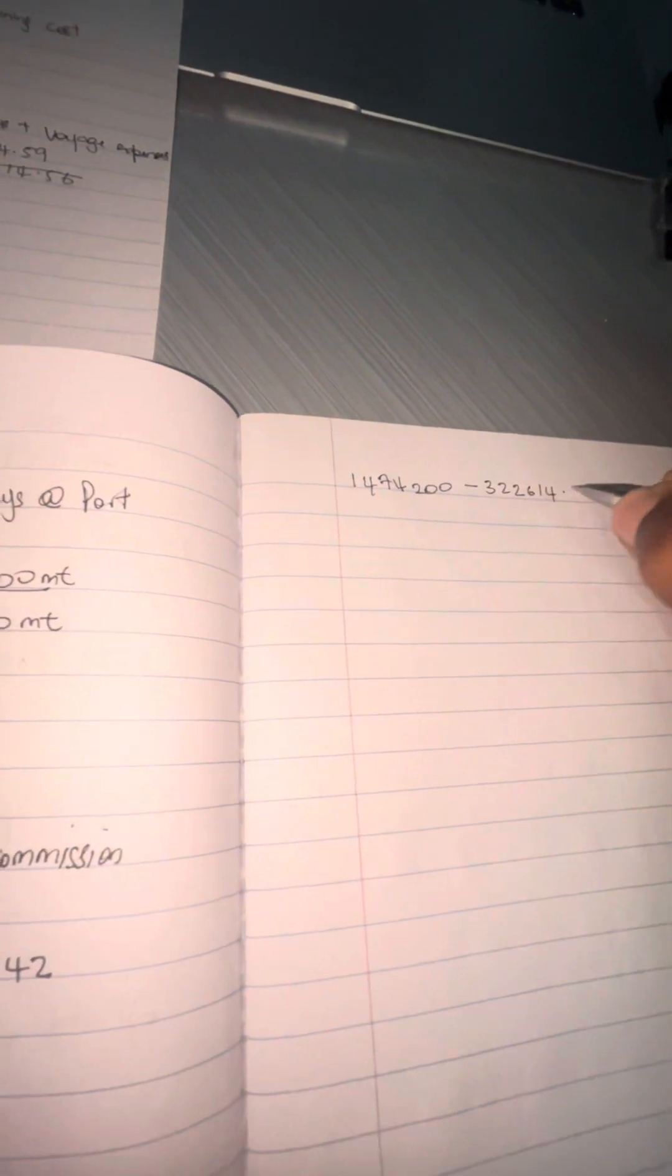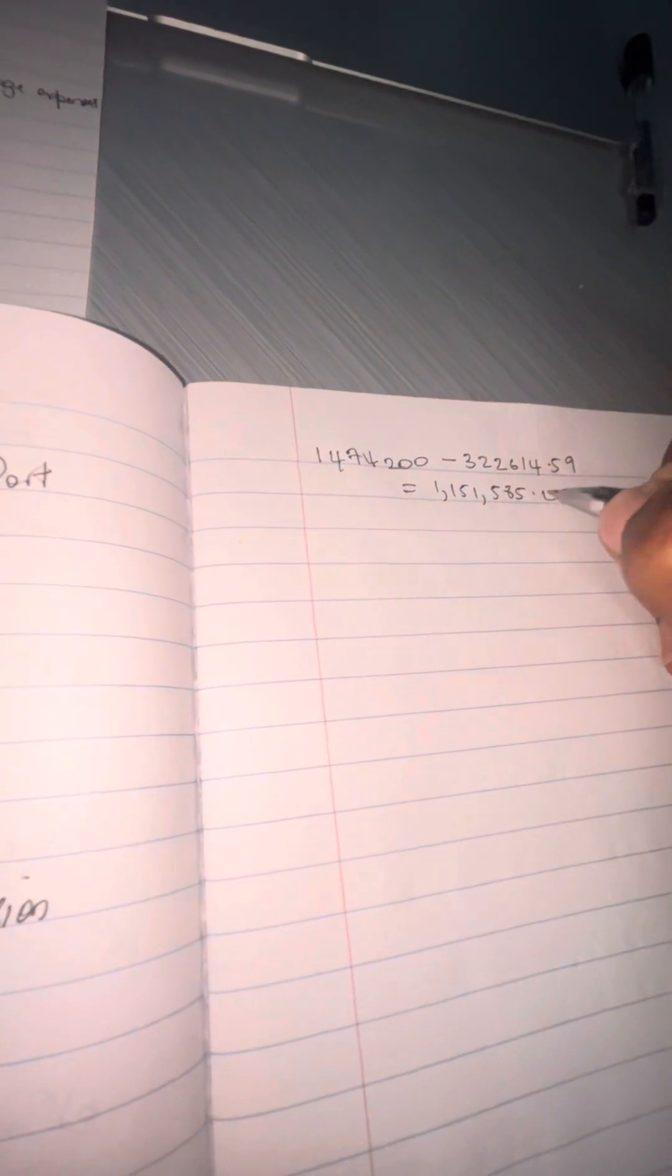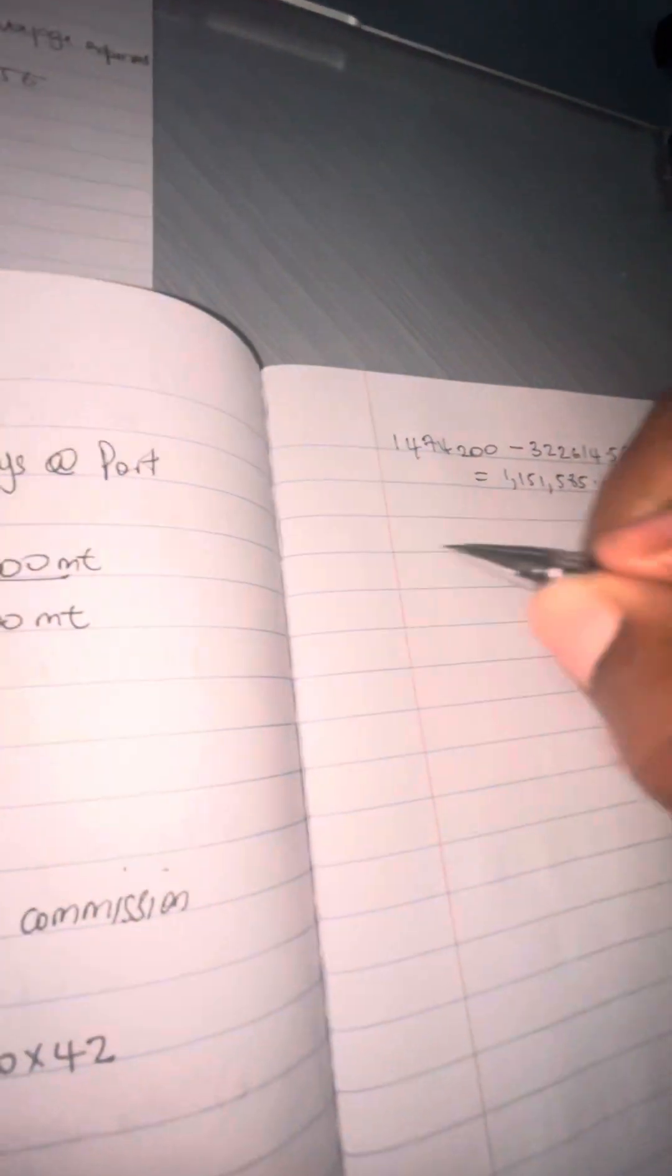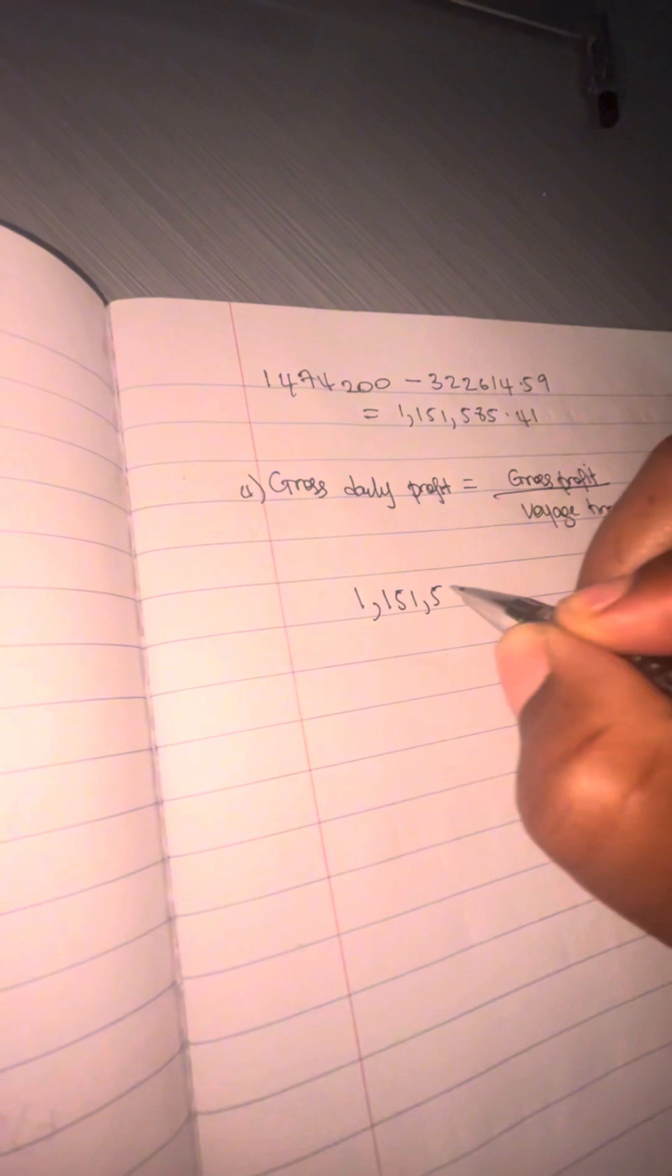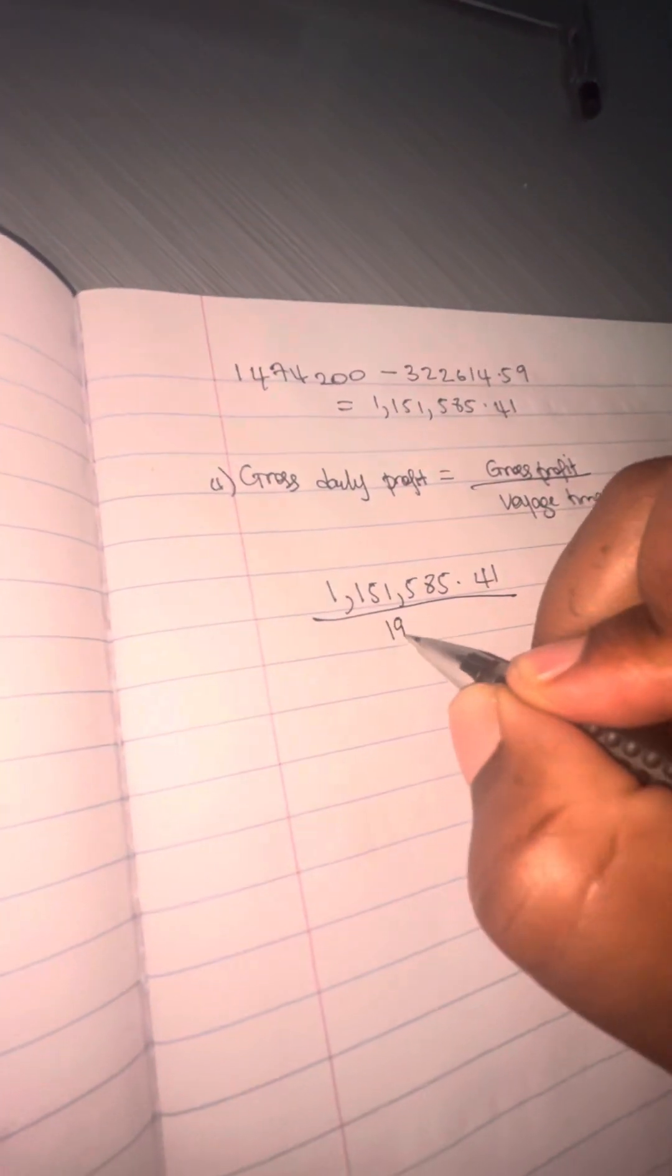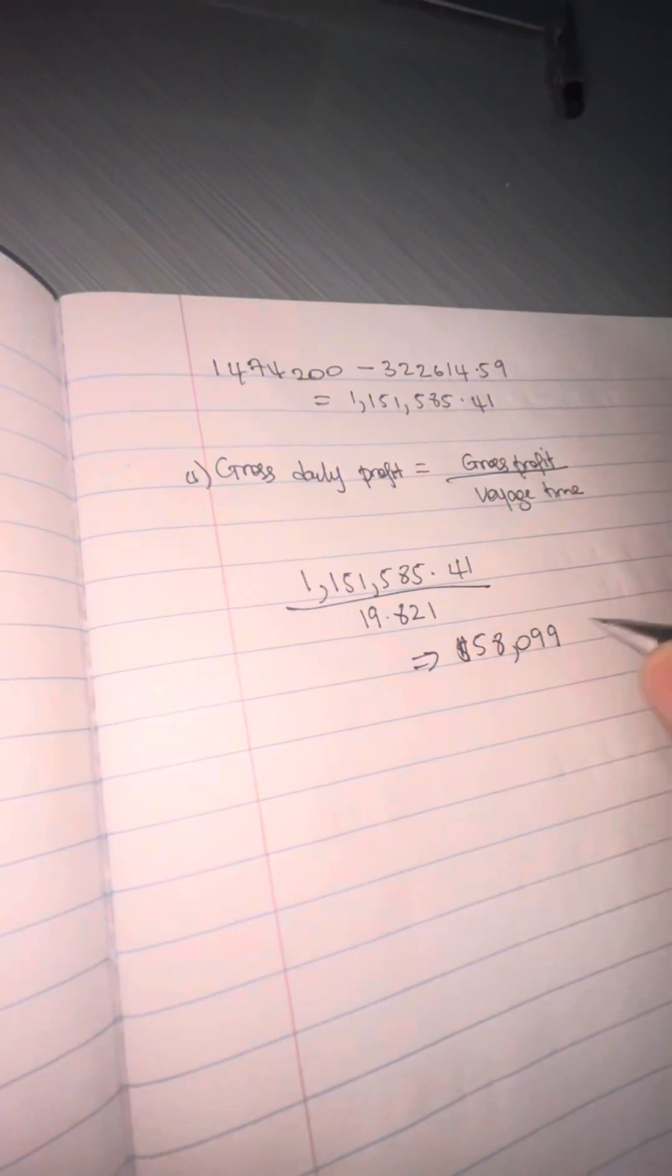That equates to 322,600. You take your net freight amount from your voyage expenses, and this equals 1,151,584.41. At this point we're no longer working with three decimal places because we're talking about money. Now we do gross daily profit, which is gross profit over total voyage time.